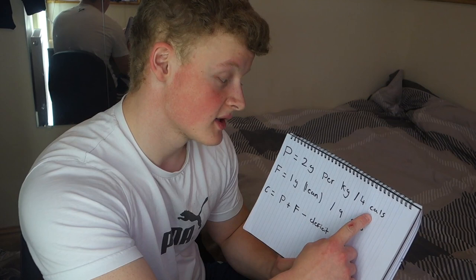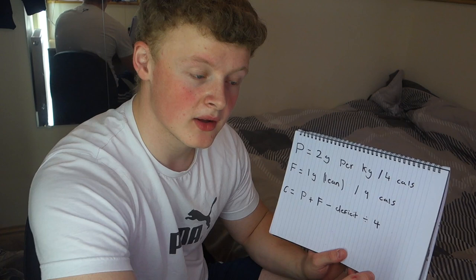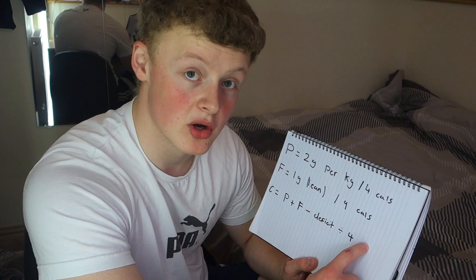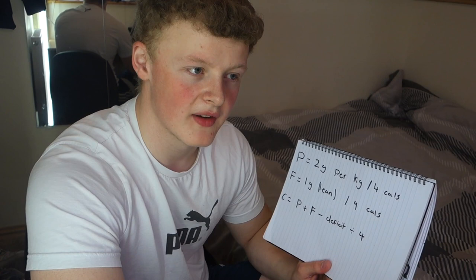What you want to do with that calorie amount is break it down into proteins, fats, and carbs. For protein, it's 2 grams per kg, and there are 4 calories per gram of protein. For fat, it's 1 gram per lean body weight, and there are 9 calories per gram of fat.